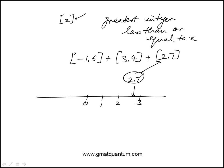They're asking, what's the greatest integer that's less than or equal to that? If you look at all the integers that are less than 2.7 - 2, 1, 0, and so on - which one is the greatest? That's 2. So this is equal to 2.